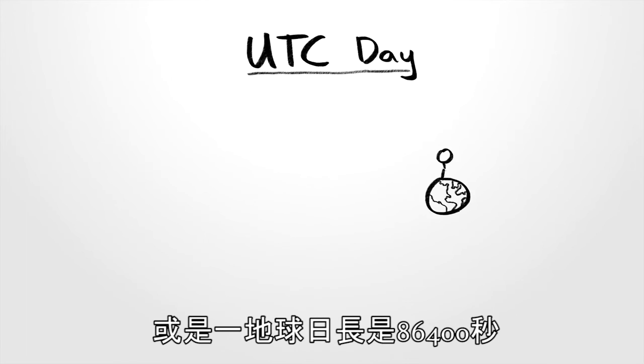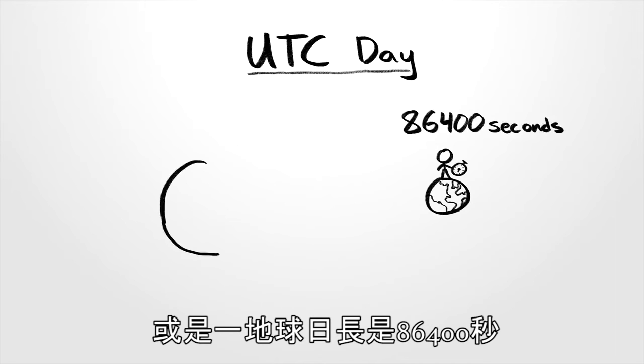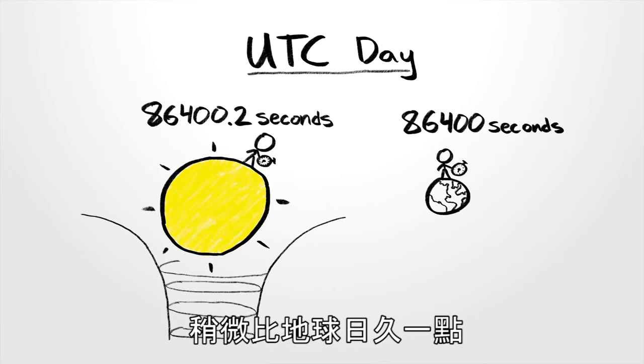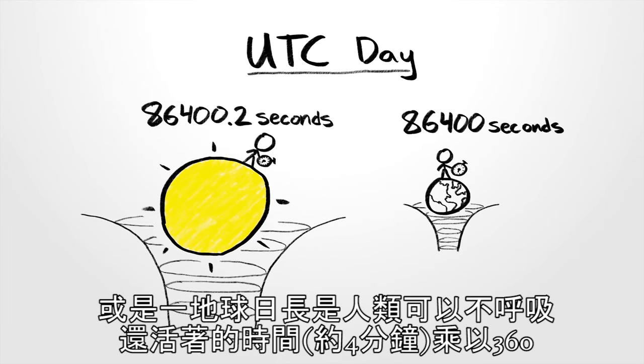Or maybe a day is simply 86,400 seconds, in which case a day on the Sun is slightly longer than a day on the Earth due to gravitational time dilation.